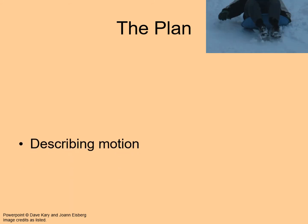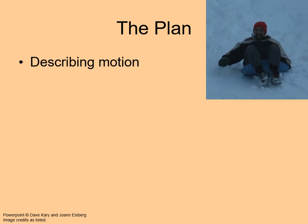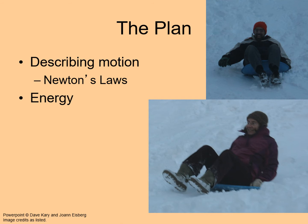So in this chapter, we'll start out by looking at ways of describing motion based on forces. This comes from Newton's laws of motion. Then we'll move on to a different understanding of motion provided by looking at energy. Depending on what you're doing, either forces or energy can be a very effective way of understanding motion. After this, we'll focus more specifically on the force of gravity and how it allows us to understand orbits.